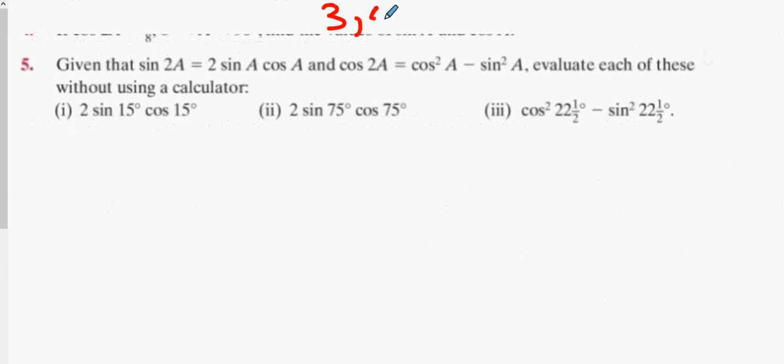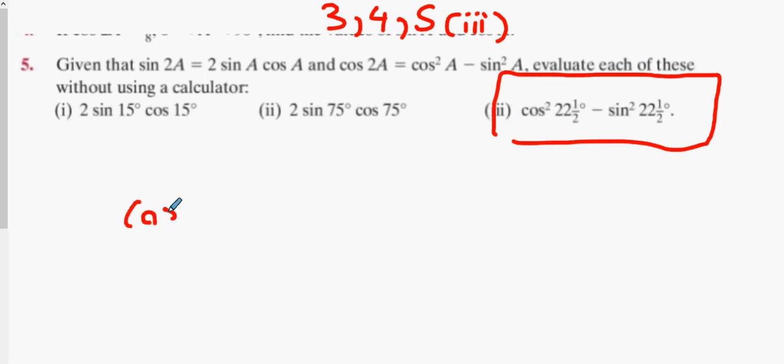All right, I'll do one of part five. I'll do five part three. Does anybody see what this equation looks like? Cos squared some angle take away sin squared the same angle. Which equation does that match up with? It matches up with cos 2A, doesn't it?